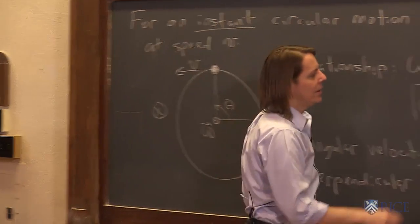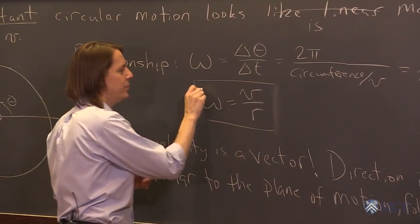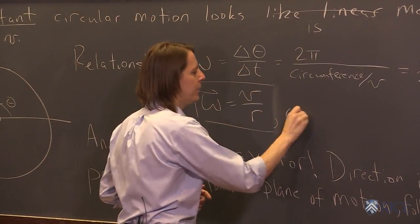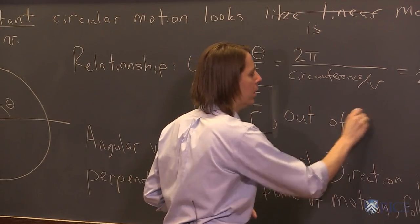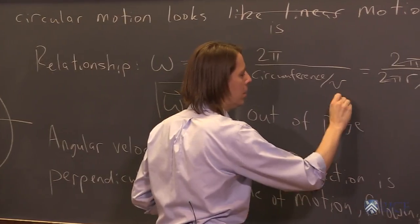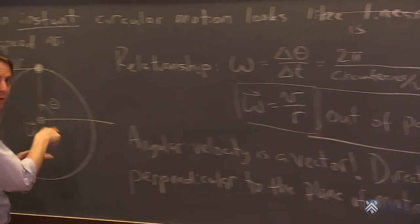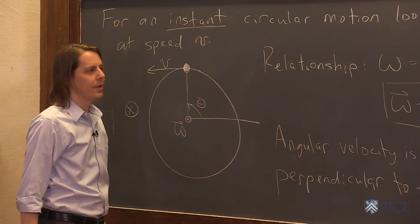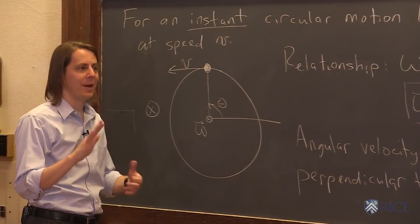So omega is a vector. And if we wanted to specify it as a vector, then we could say this is the magnitude and it's out of the plane. And now that's specific for this case. The way we drew this, omega is out of the page. So keep in mind, omega really is a vector. Even though a lot of problems you do may just want the magnitude, it is a vector.